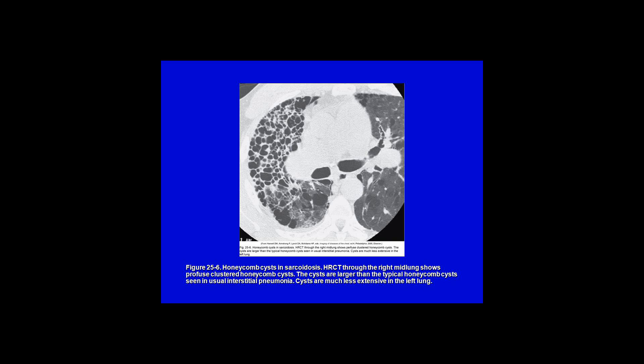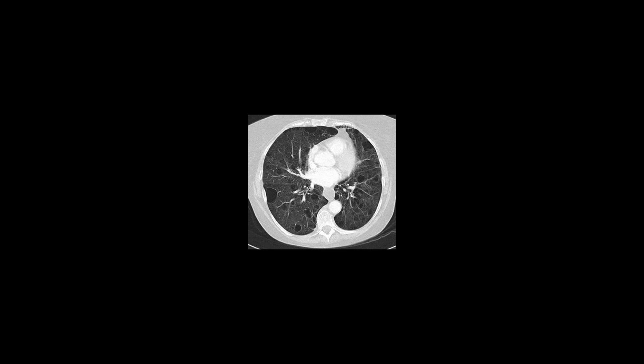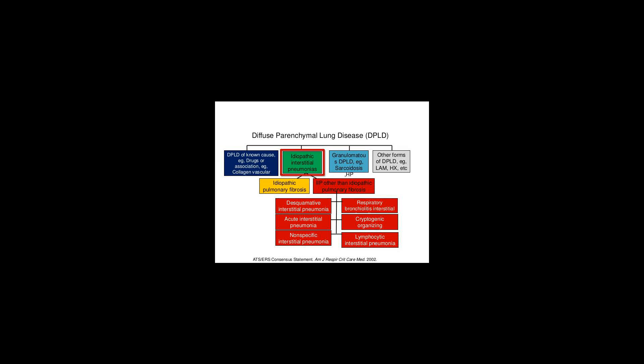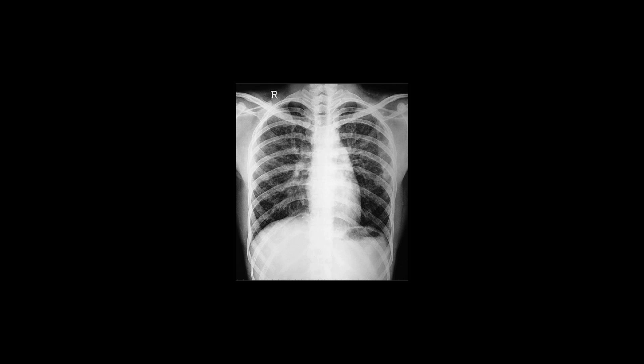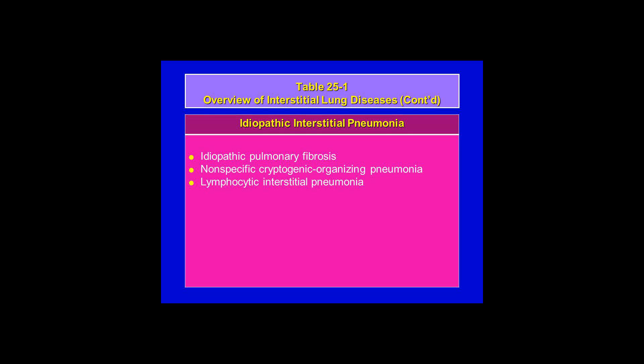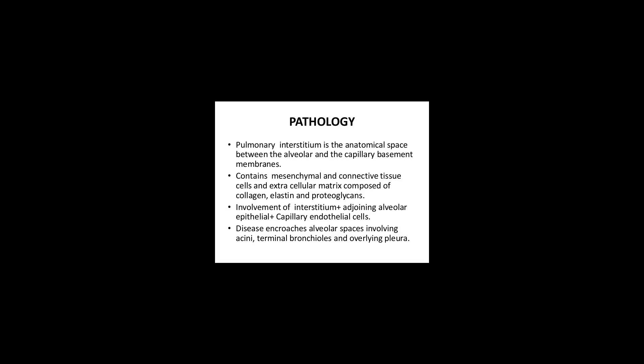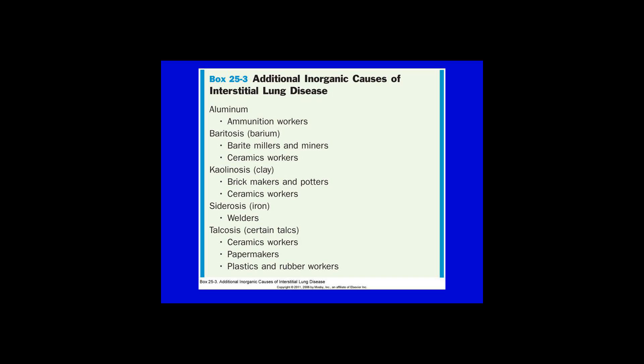Arterial blood gases may reveal hypoxemia when tested in a lab. Respiratory alkalosis may also be present. Peripheral lymphocytosis can be observed, and a lung biopsy may also be indicated.